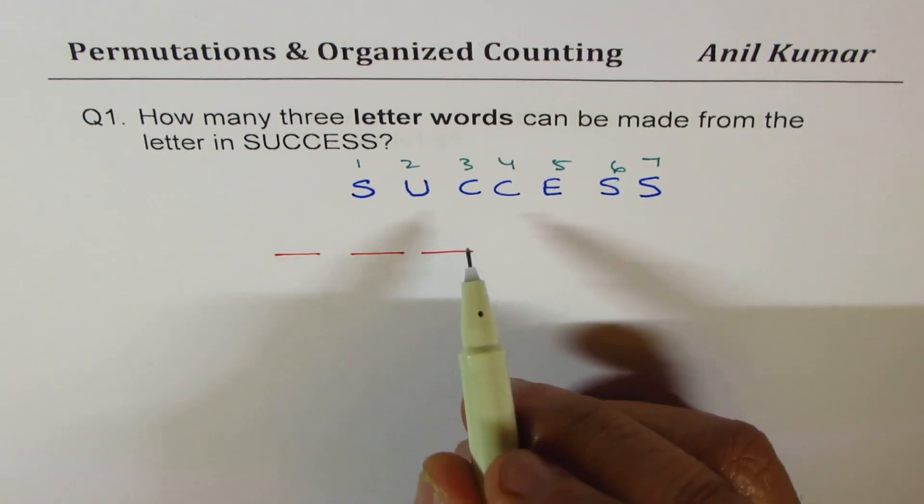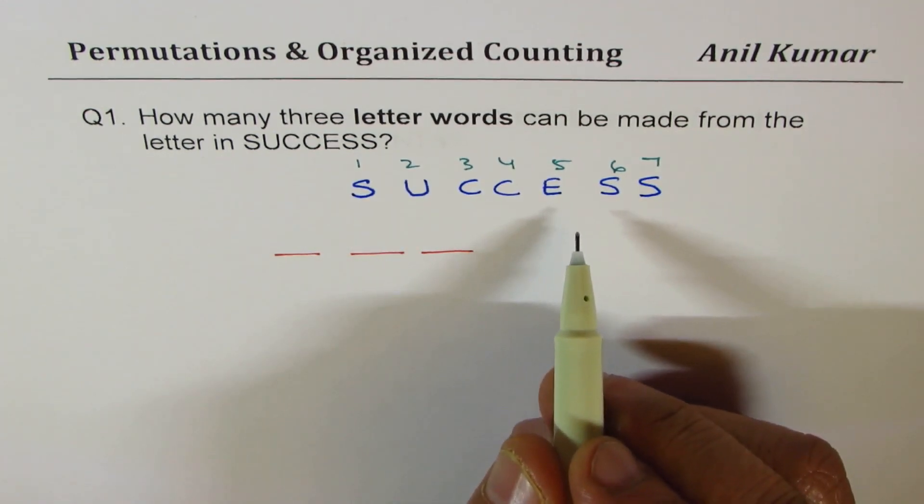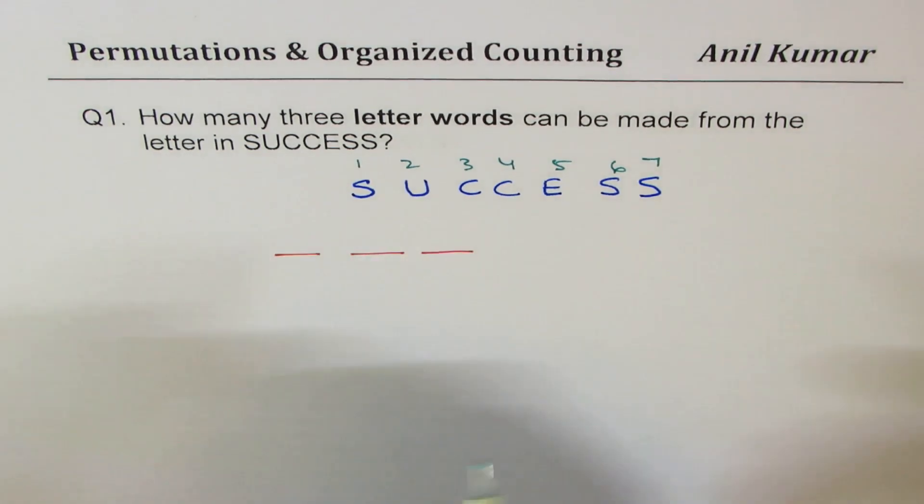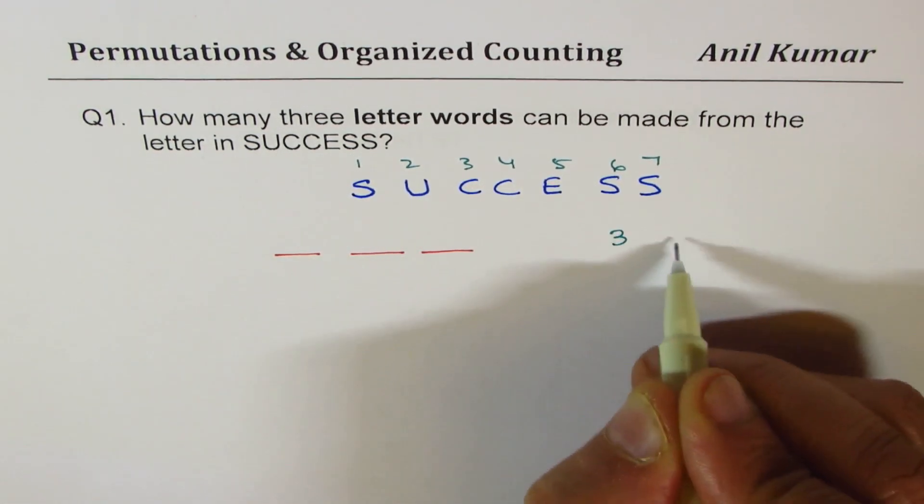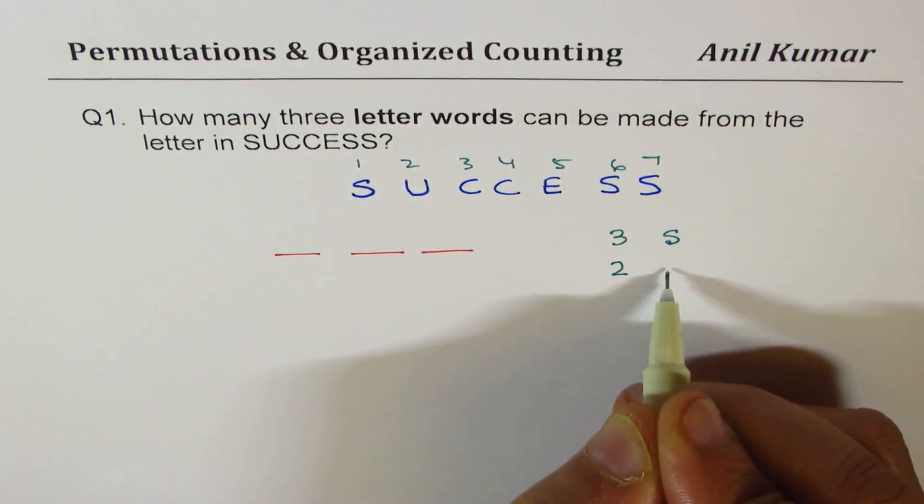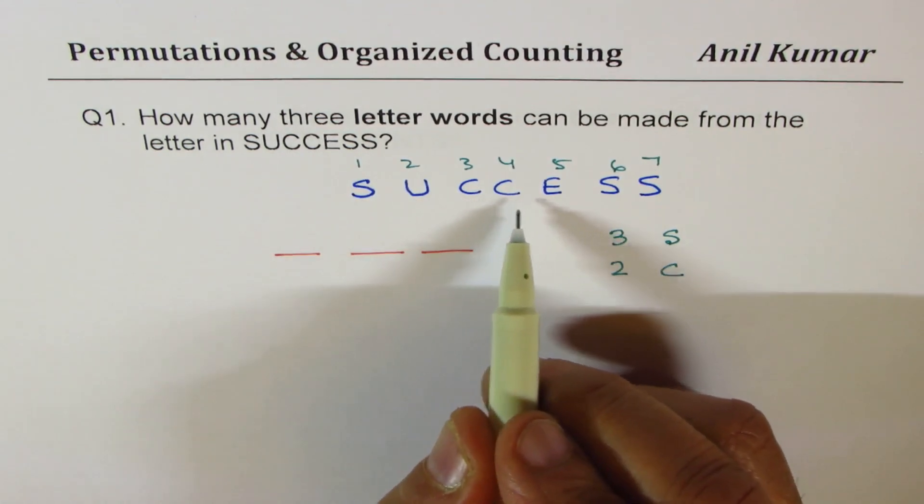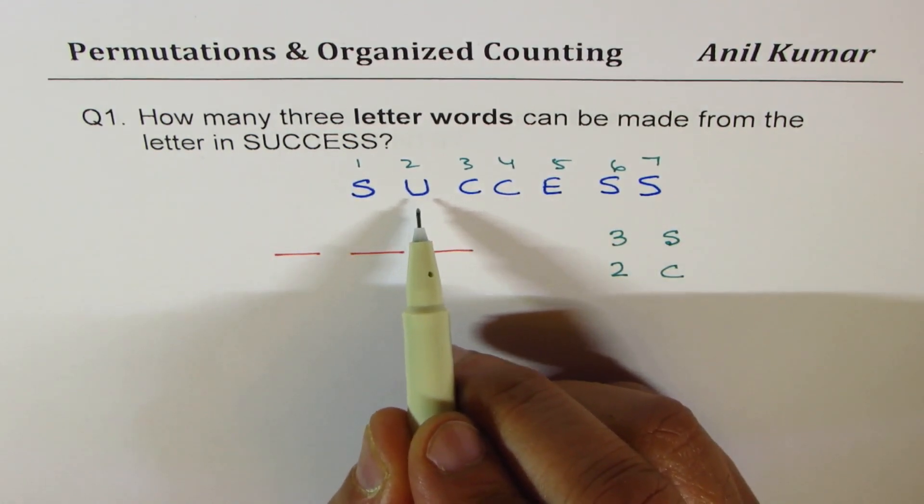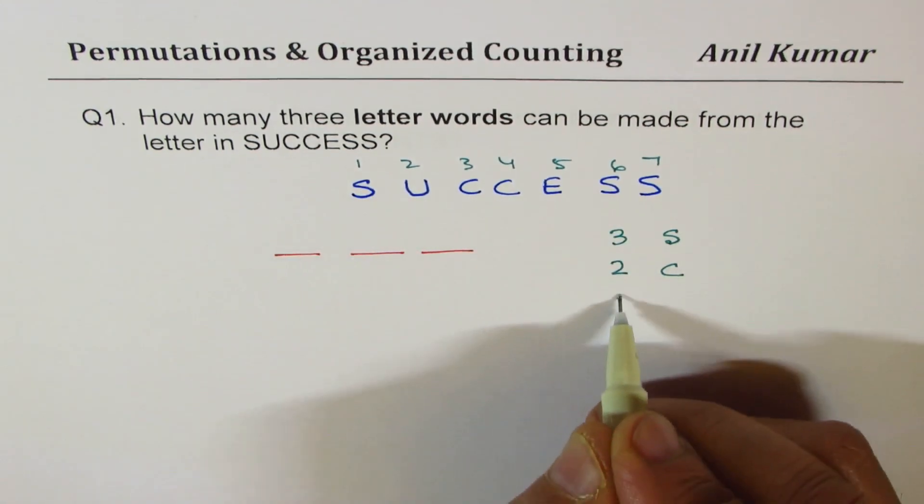How many of each kind do we have? As far as S is concerned, we have got three S's, okay, then two C's, two C's, and then we have single letter U and single letter E. So one number of U and...